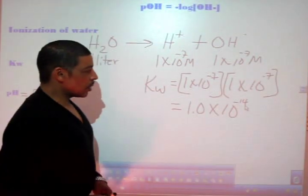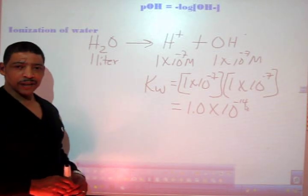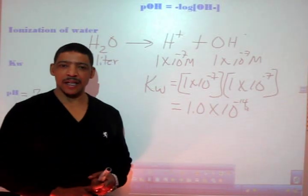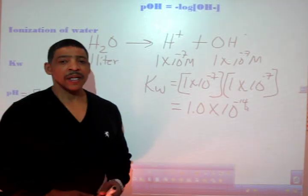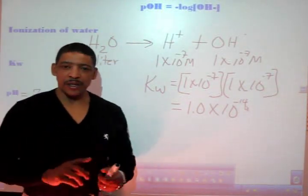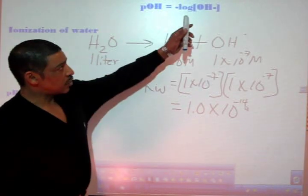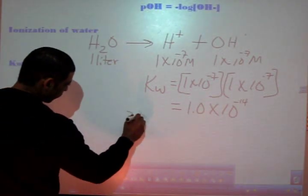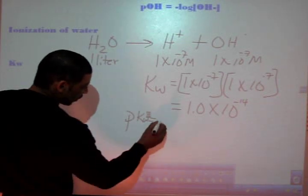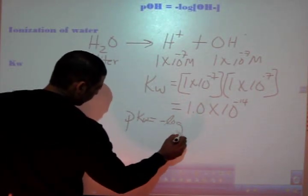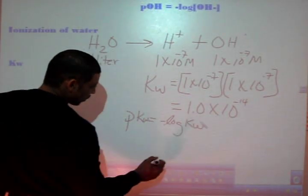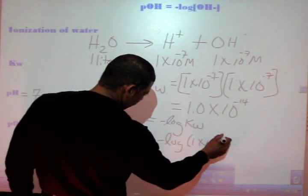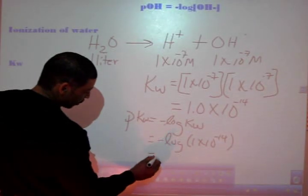Now that we found the Kw of a sample of water, we can also find the pKw. pH is equal to the negative log of the hydrogen ion concentration. pOH is equal to the negative log of the hydroxide ion concentration. So pKw is simply equal to the negative log of Kw, which is equal to the negative log of 1×10⁻¹⁴, which gives us a value of 14.